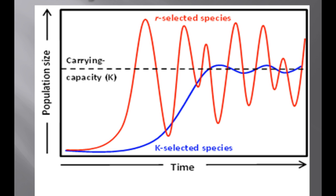r-selection, or density-independent selection, selects for life history traits that maximize reproduction. In density-independent populations, birth rate and death rate do not change with population density. Also, density-dependent birth and death rates are an example of negative feedback that regulates population growth. Write that down.